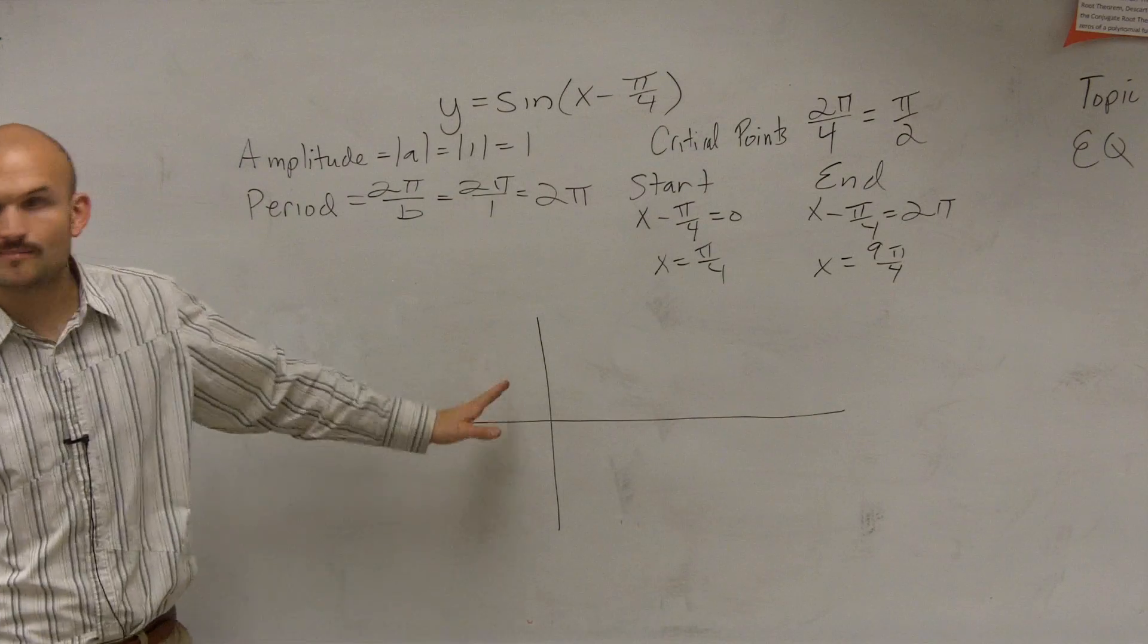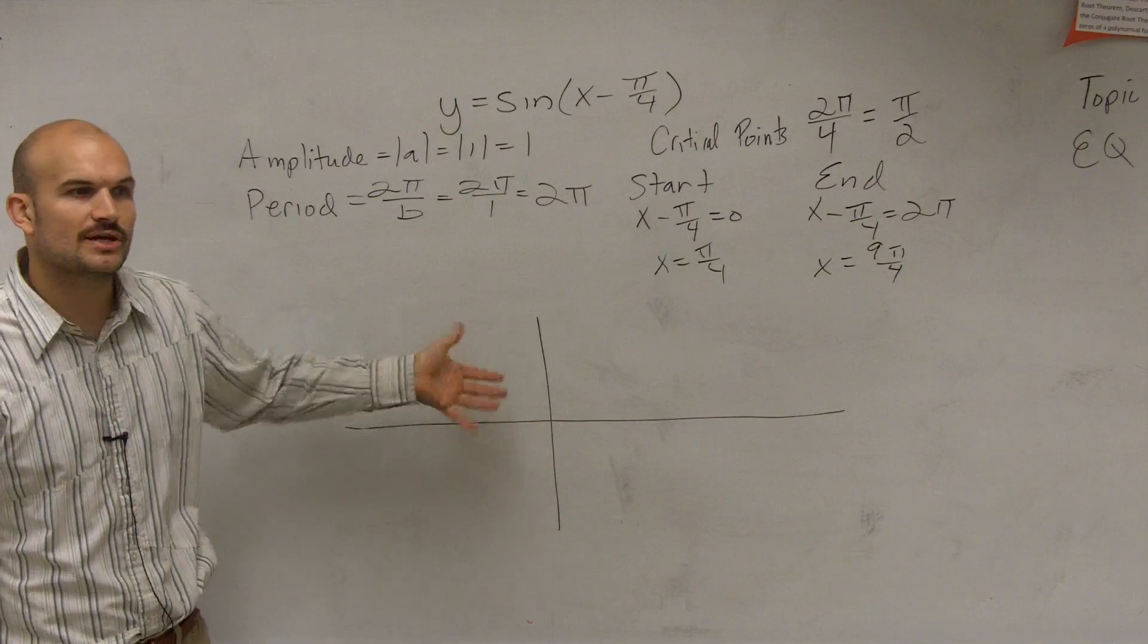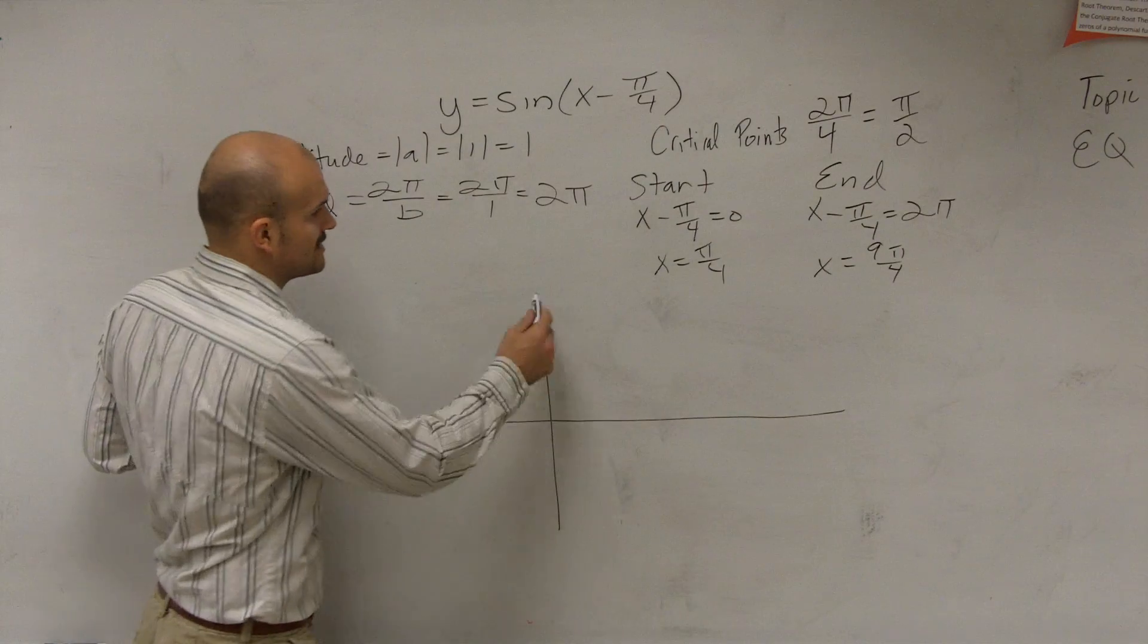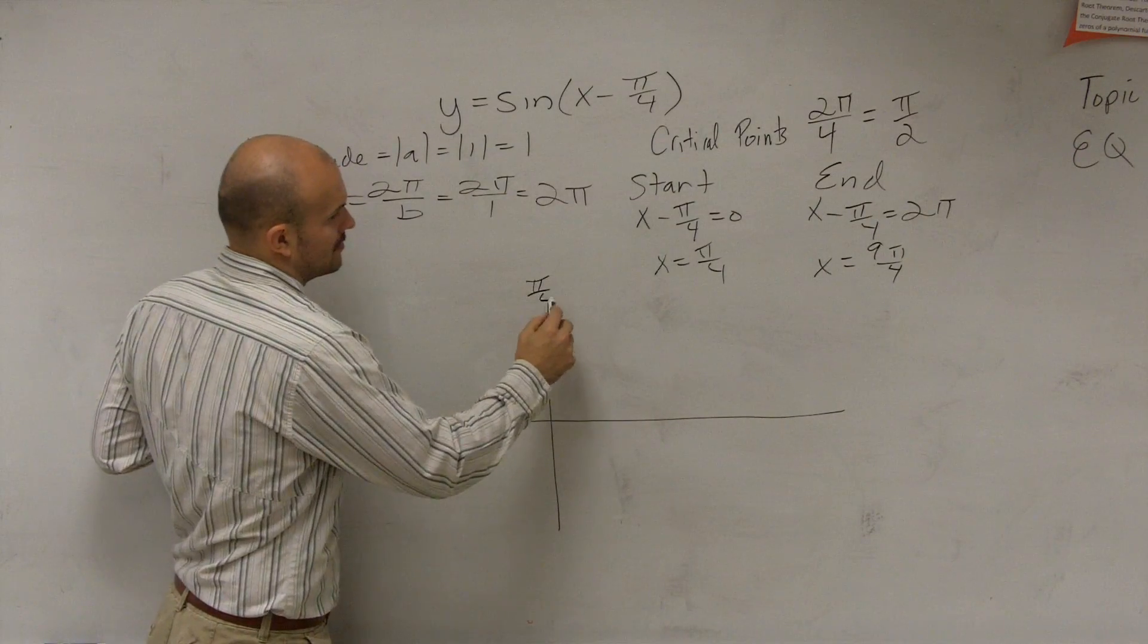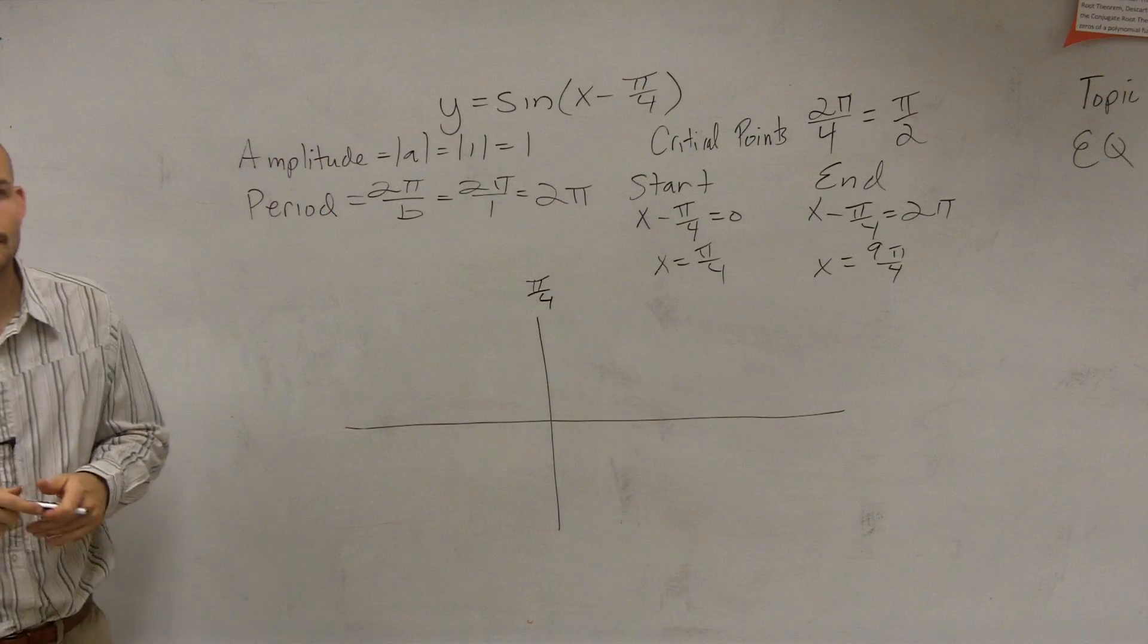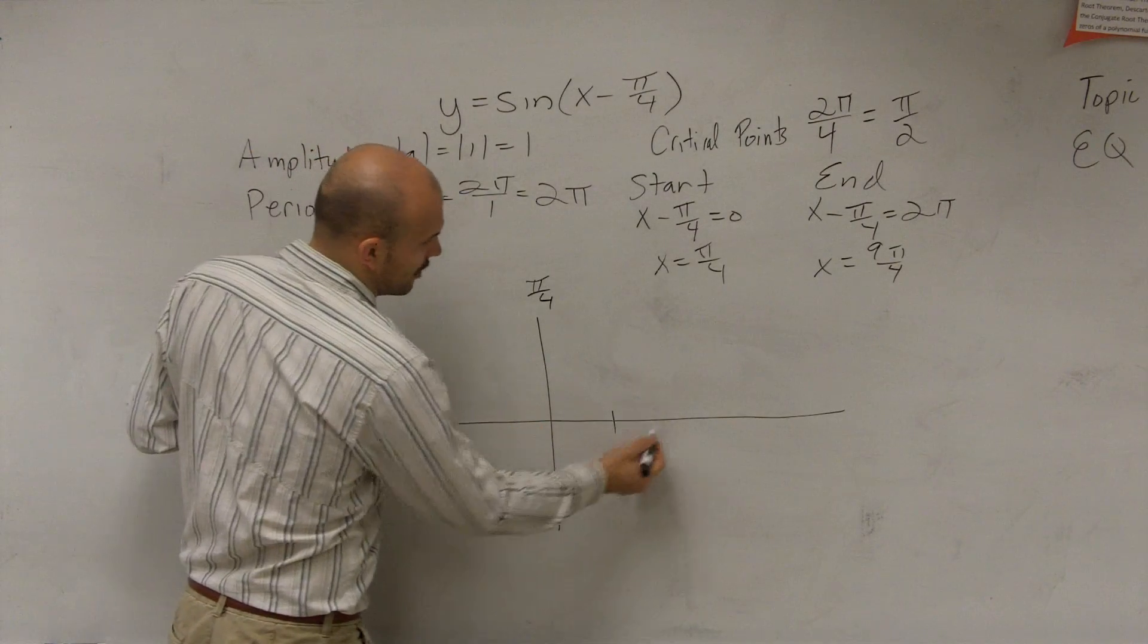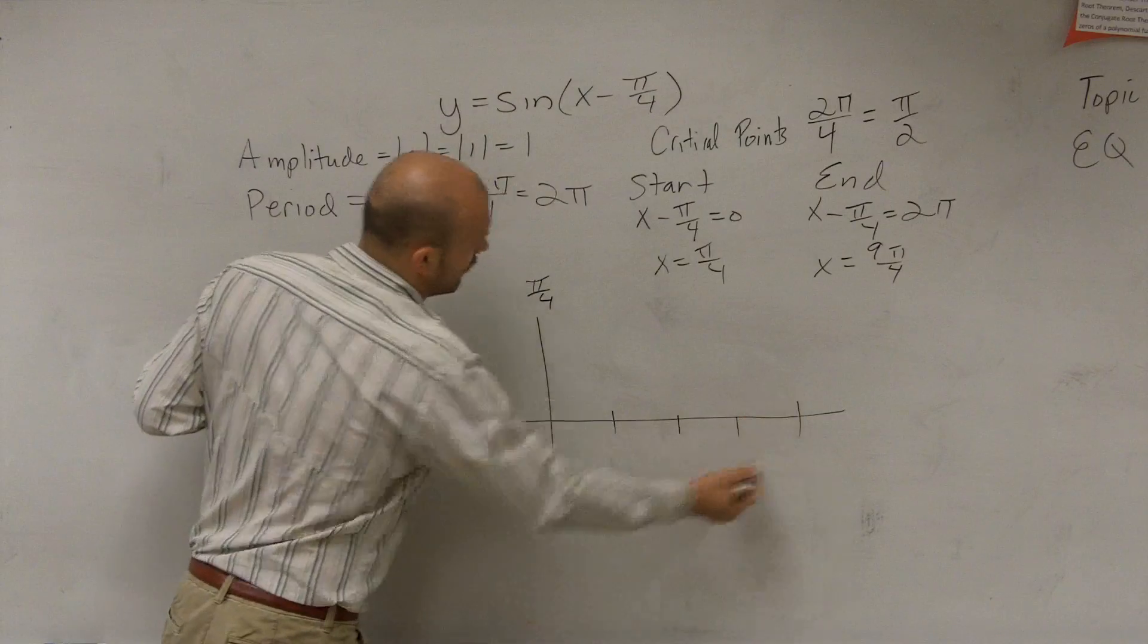So ladies and gentlemen, our starting point now, I want to show you guys how to graph. Our starting point, rather than being at 0, we're going to have our starting point is going to be at π over 4. And then we're going to have our four critical points, 1, 2, 3, 4.